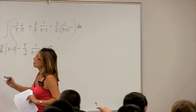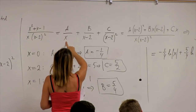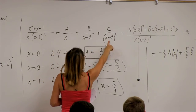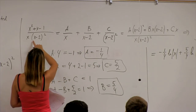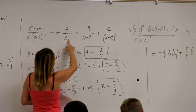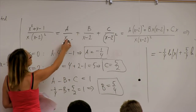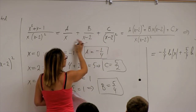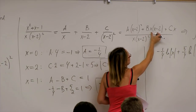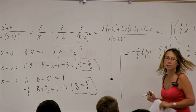For the common denominator question: here I have a factor of x and two factors of x minus 2, so the common denominator is x times (x minus 2) squared. The first term A over x is missing (x minus 2) squared; the second term B over (x minus 2) is missing one power of x minus 2 and is also missing x; and the last term C over (x minus 2) squared is only missing x.